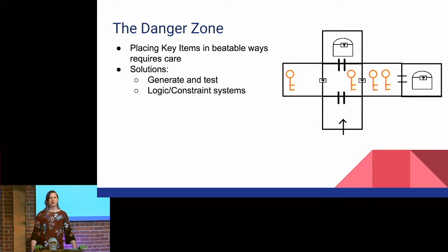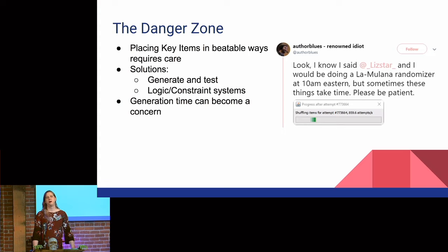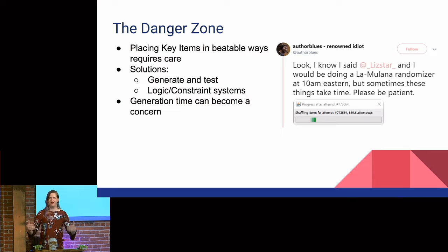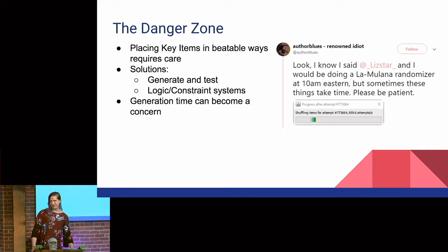Recently there have been a few things that use logic or constraint systems — the only one I know about is the one I wrote. But if you do that generated test, generation time can be a concern if your system is complex, if there are a lot of dependencies or a lot of places you can put things. That screenshot was taken at about 10:30 a.m. Eastern.